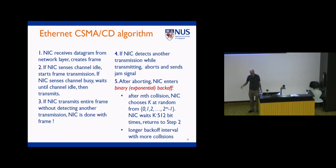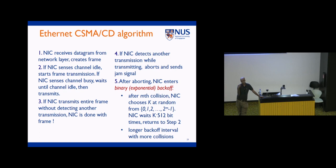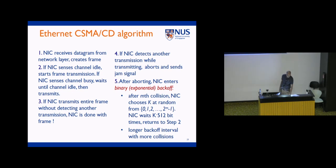The last thing we saw in random access was how we react to a collision: we don't retransmit immediately. Instead, we generate a random number in a certain range. Initially that range is 0 or 1 — if you choose 0, you transmit immediately; if you choose 1, you wait a certain amount of time equal to the time to transmit 512 bits. If you still have a collision, you double the window to 0–3, then 0–7, and so on. This is the binary exponential backoff scheme.